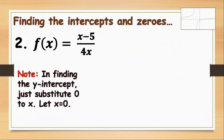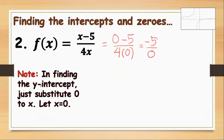Now let's find the y-intercept. Substituting 0 for x: 0 minus 5 all over 4 times 0 gives us negative 5 all over 0. Take note that if you divide a number by 0, your answer will be undefined. If it is undefined, it means you don't have a y-intercept.